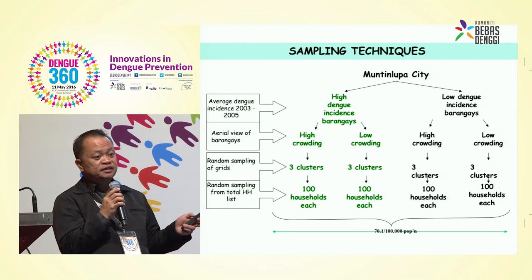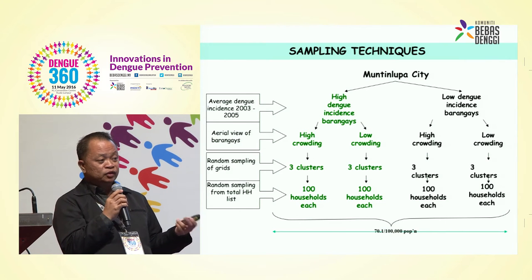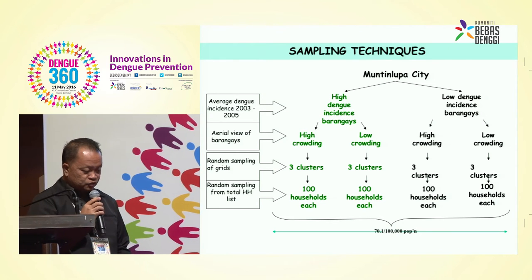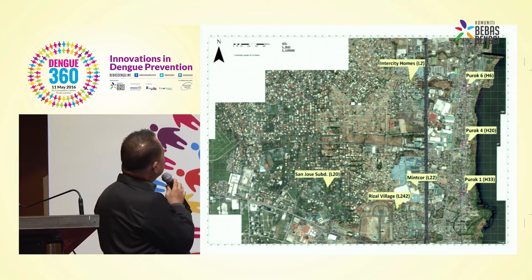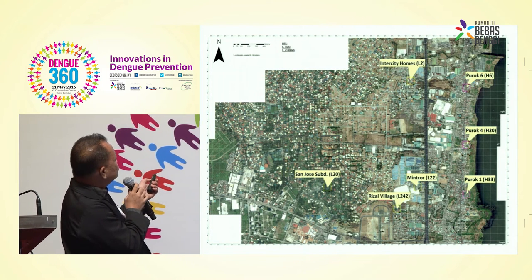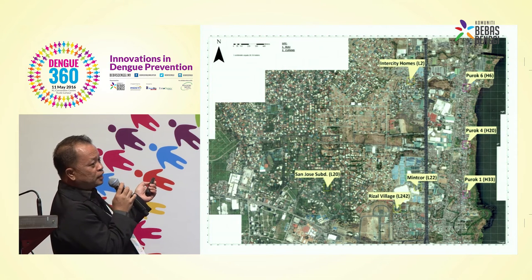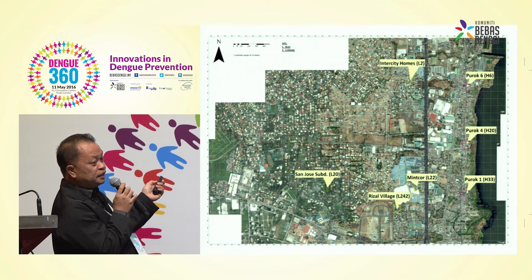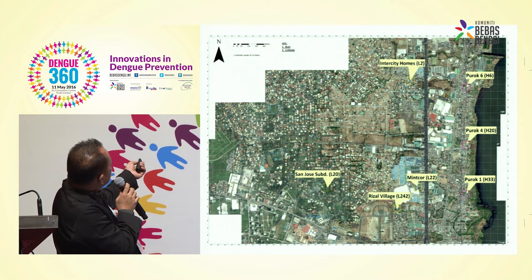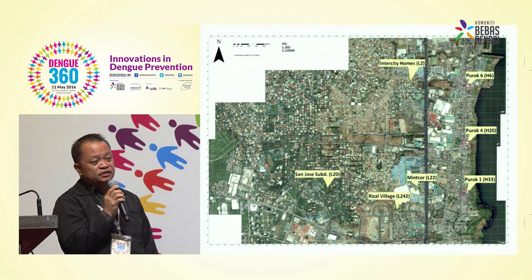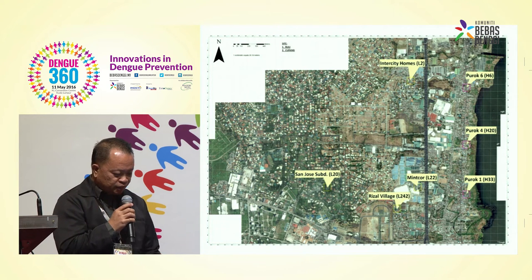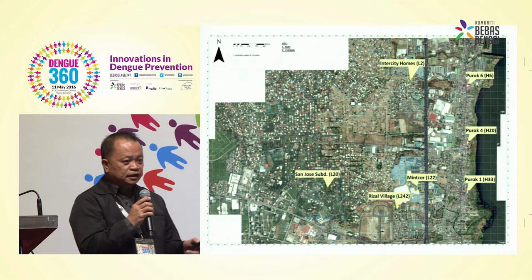When I say crowding, it means density of people — high crowding means high people density and low crowding means fewer people in a place. So it actually looks like this: we produced a grid using Google Maps. If we see roofs and houses throughout the grid, that is a high crowding community. If we see greens — like vegetation and open areas — we consider that a less crowded community because of fewer houses visible from the aerial view. We selected six candidate communities.